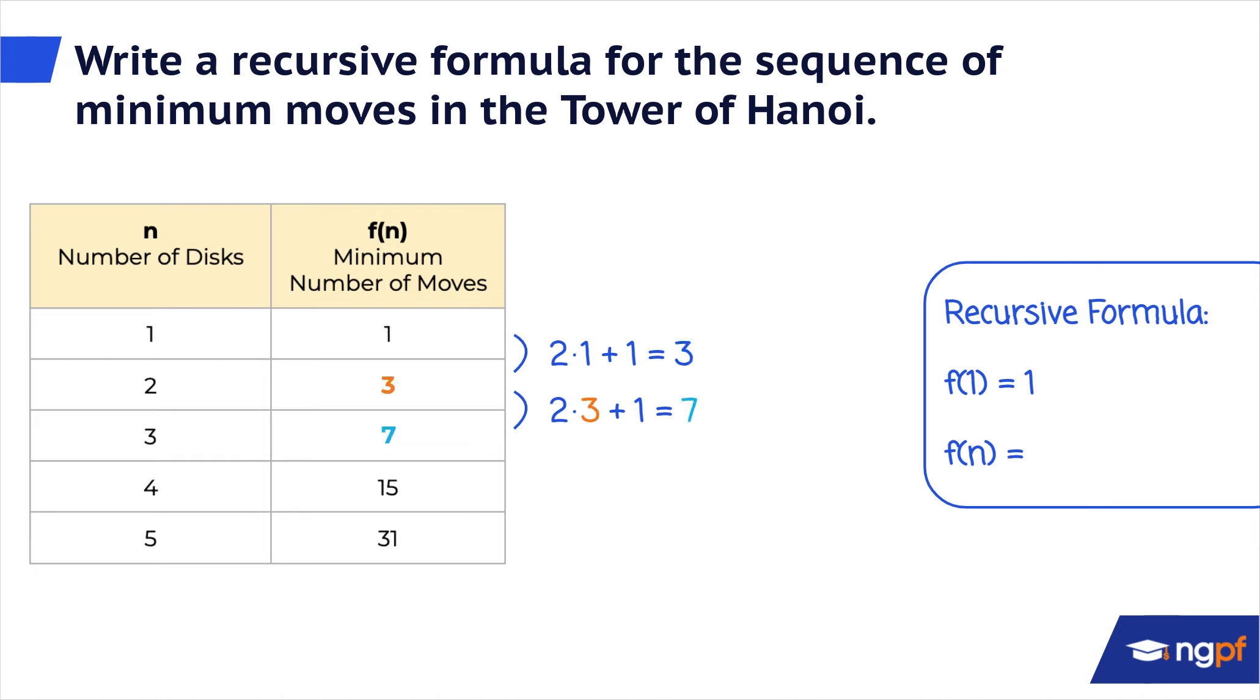Let's keep going to find the third term. The second term is 3. We multiply it by 2 and then add 1. That gives us the third term, which is 7.